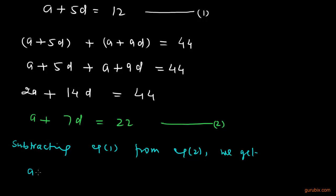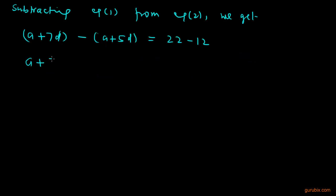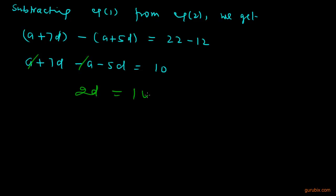We get A plus 7D minus A plus 5D, and we subtract 12 from 22. This gives A plus 7D minus A minus 5D equals 10. The A terms cancel out, and subtracting 5D from 7D gives 2D equals 10. Therefore, D equals 5.